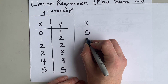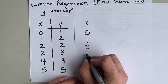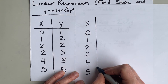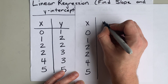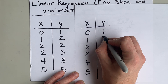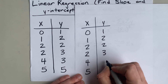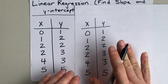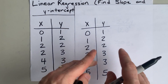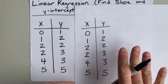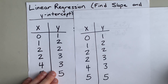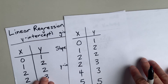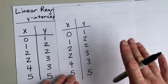My x's are 0, 1, 2, 2, 4, and 5. My y's are 1, 2, 2, 3, 3, and 5. These don't form a perfect line — we're doing the line of best fit here, the line of least squares, if you prefer to call it that.